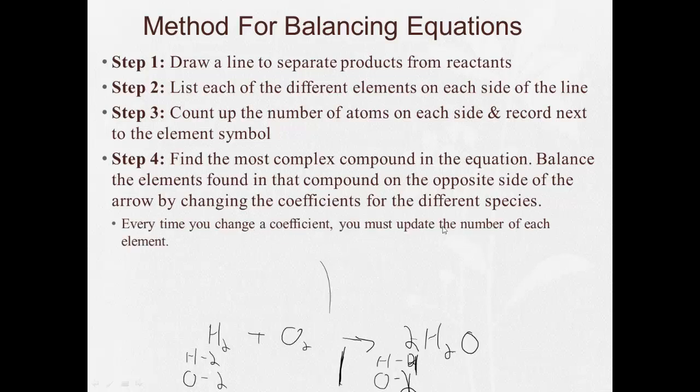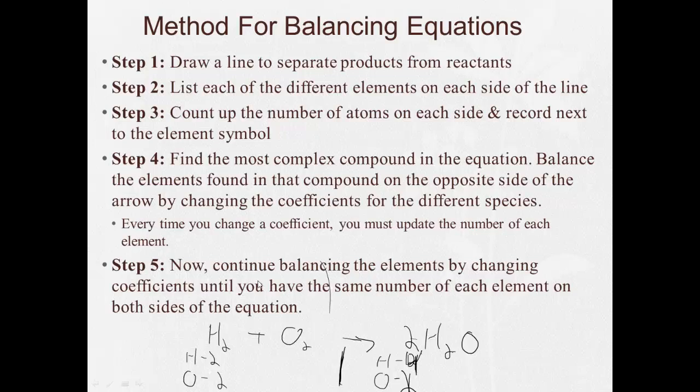So that brings me to step five. Every time you change a coefficient, you must update the number of each element like I just did here. That brings me to step five. I need to continue balancing the elements by changing coefficients until you have the same number of each element on both sides of the equation. Well, at this point in time, there's two oxygens on each side, but now I have two hydrogens on the left and four on the right. So I need to somehow get four hydrogens on the left. If I multiply this two by two by putting a coefficient here, now I have four hydrogens on the left. Let's double check. Two times two, four hydrogens on the left, two oxygens on the right. Two times two, four hydrogens on the left, two times one for two oxygens on the right. Four hydrogens on the left, four hydrogens on the right. Two oxygens on the left, two oxygens on the right. I am done balancing my equation.